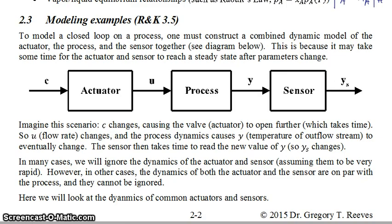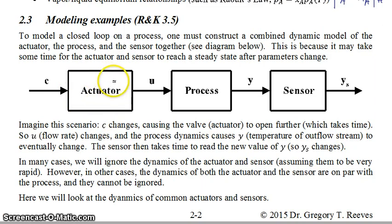To model a closed loop process one must first construct a combined dynamic model of the actuator, the process, and the sensor all together. In the diagram shown, these three components form a linear flow from the actuator to the process to the sensor — this is not yet a closed loop diagram.